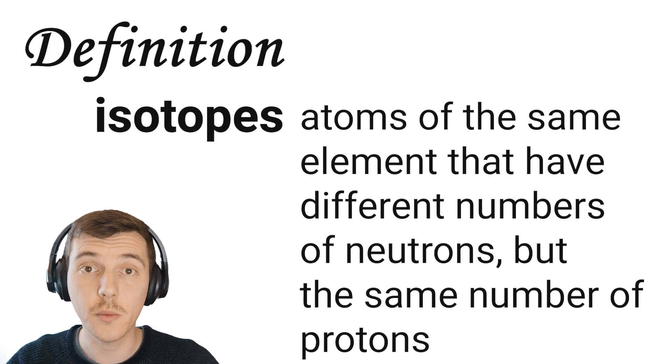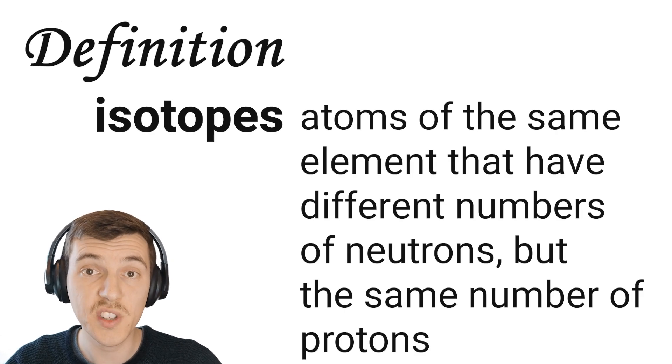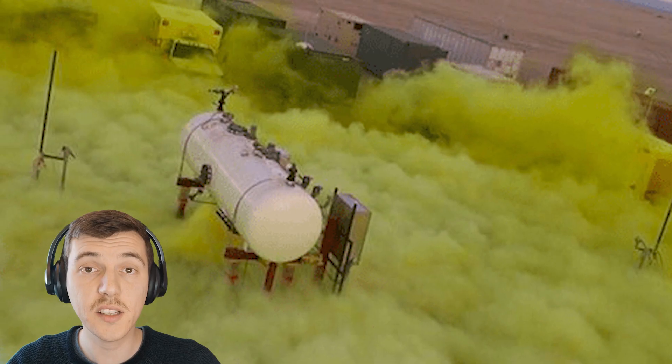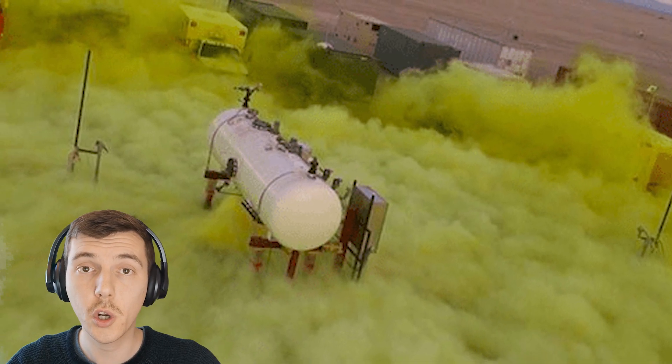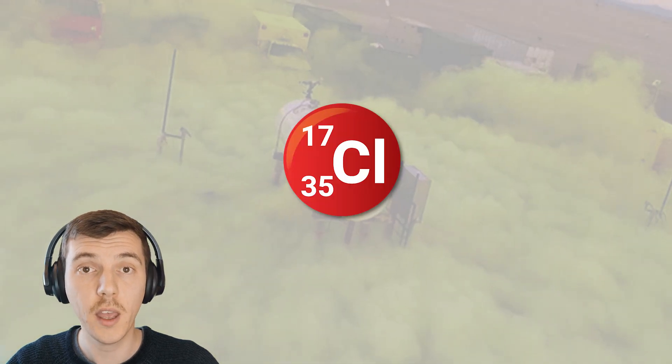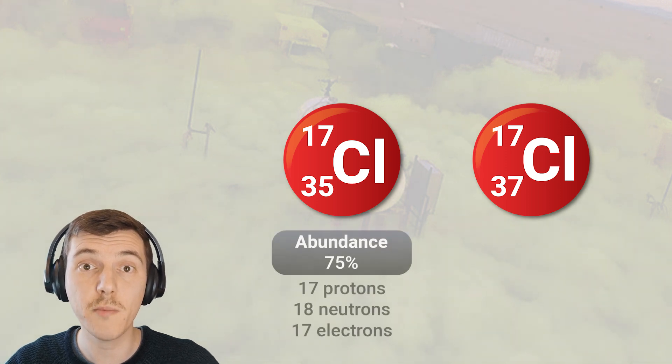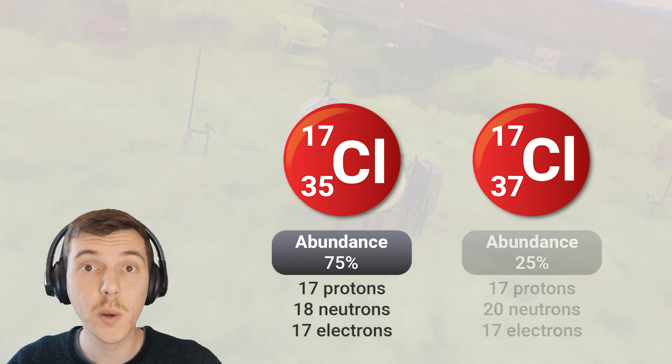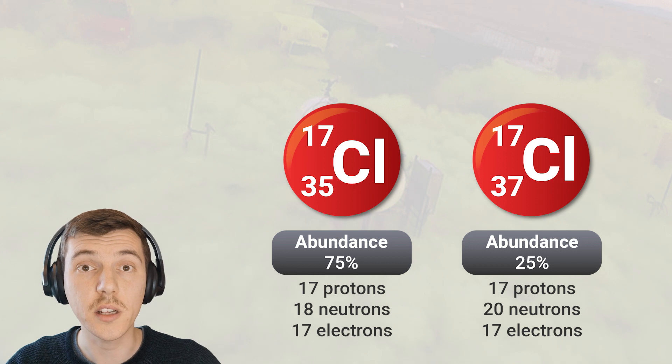Some elements have isotopes. These are atoms of the same element that have different numbers of neutrons. An example is chlorine. Chlorine has two naturally occurring isotopes: Chlorine-35 and Chlorine-37. Chlorine-35 is more abundant. What that means is if I surveyed all of the different chlorine atoms, I would find that actually 75% of all of the chlorine atoms that exist are Chlorine-35, and 25% are Chlorine-37.